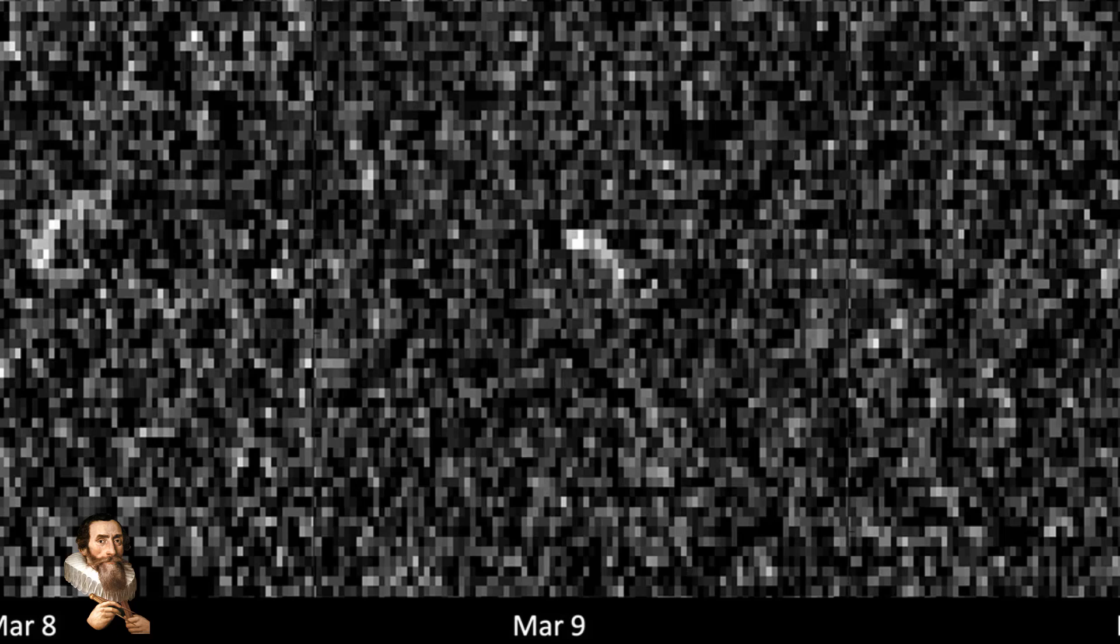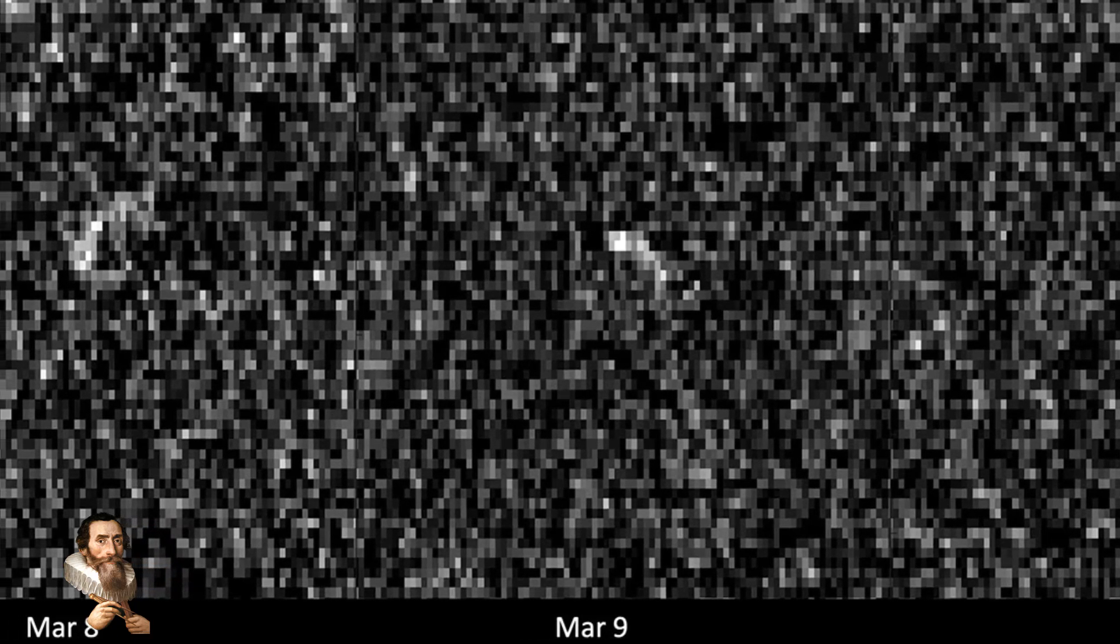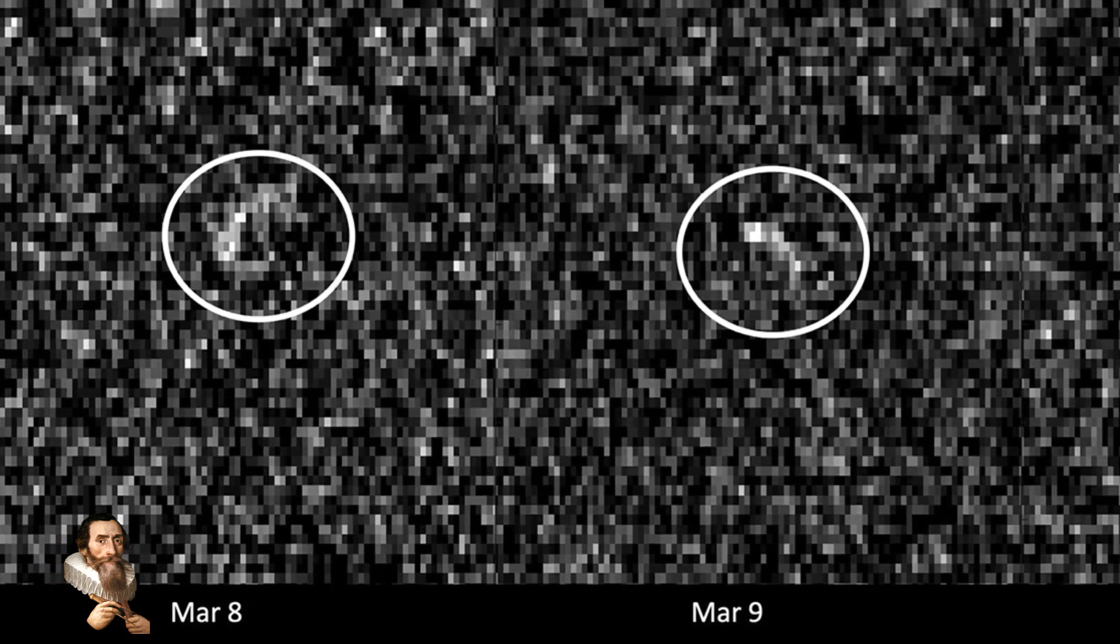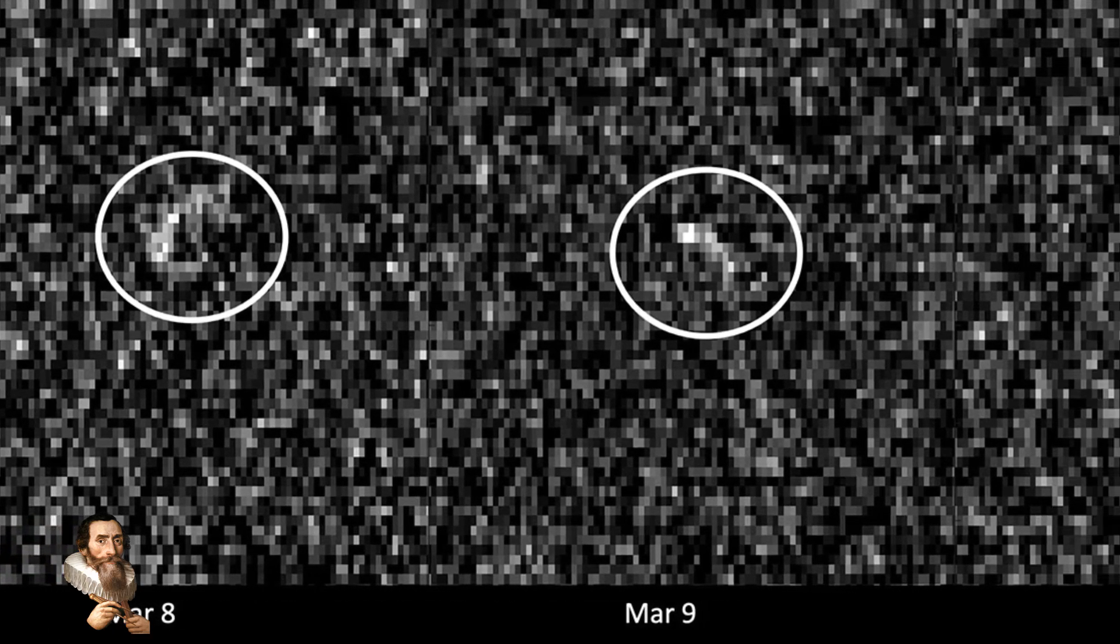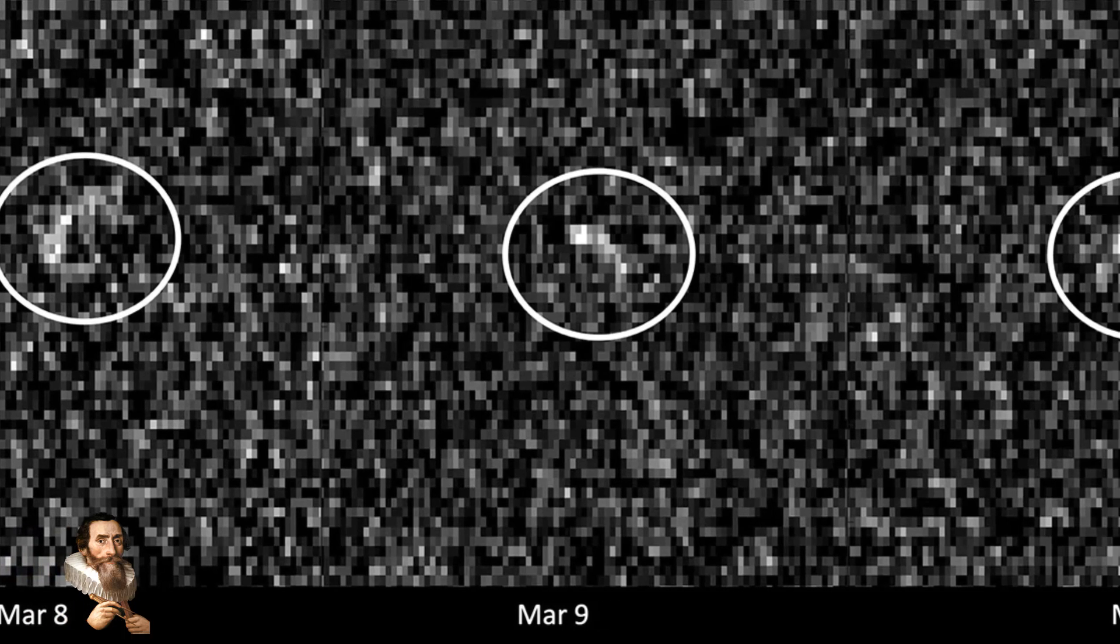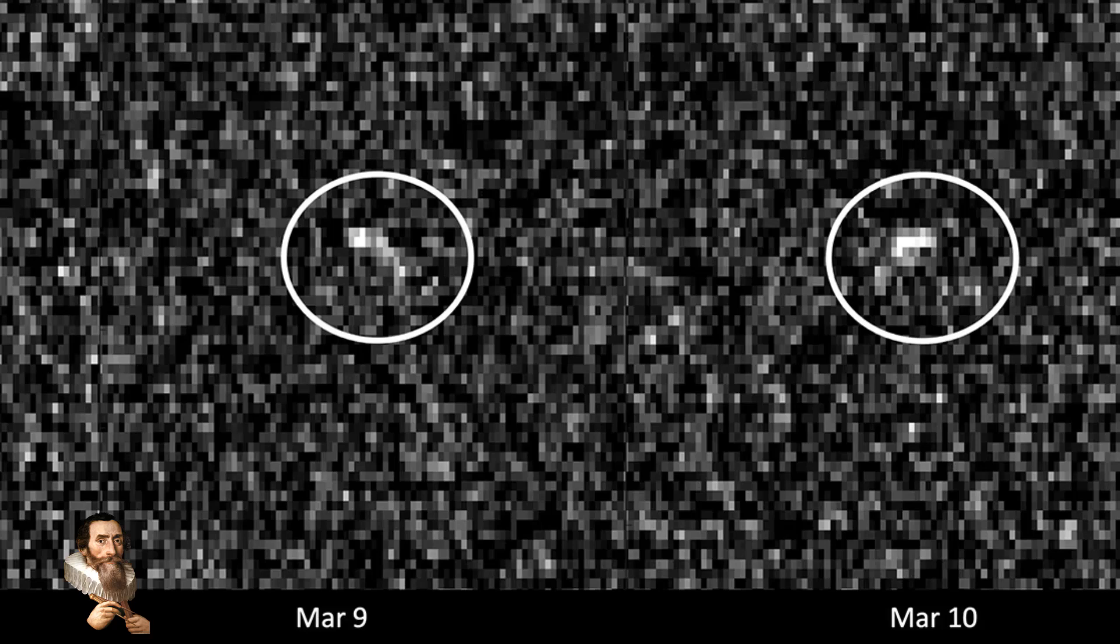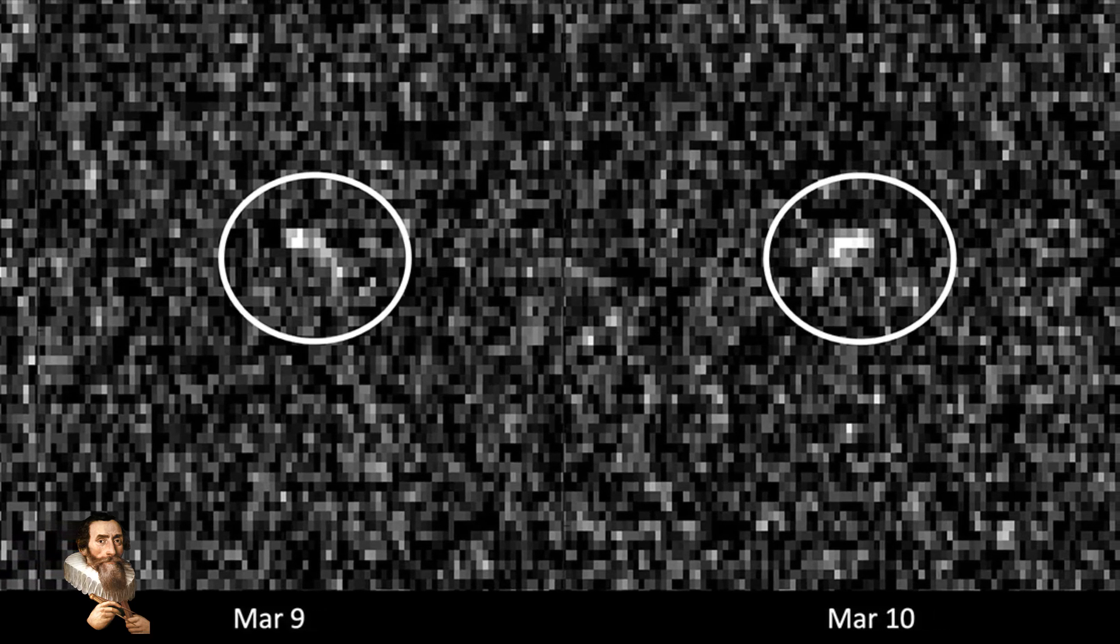Scientists will use ground-based telescopes and radar observations to track Apophis's path with high precision, and this will take place in 2027. These observations will help determine if the asteroid's orbit has been perturbed by gravitational interactions or other factors.